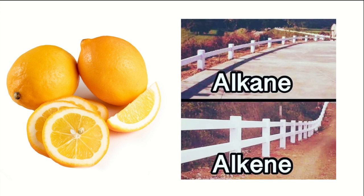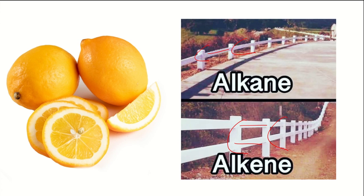Alkene is another group of organic compounds. Many plants and fruits produce alkene — for example, orange and lemon get their characteristic smell from an alkene called limonene. The key difference: alkane has a C-C single bond whereas alkene has a C-C double bond. A memory trick: 'alkEEne' has two E's, meaning double bond; 'alkane' has one E, meaning single bond.